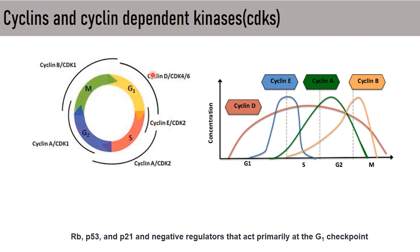Cyclins are the regulatory subunit that activates cyclin-dependent kinase, and the amount of cyclin varies at different phases. Cyclin E starts accumulating in G1 phase, reaches its peak towards S phase, and then declines. Similarly, cyclin A reaches its peak in G2 phase and then declines. Cyclin B is highly expressed in M phase and then declines. The amount of each cyclin activates the corresponding CDKs in their respective phase of the cell cycle.